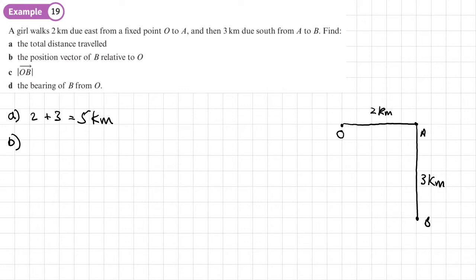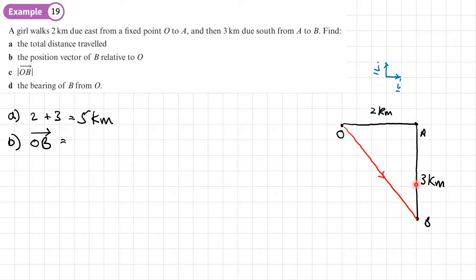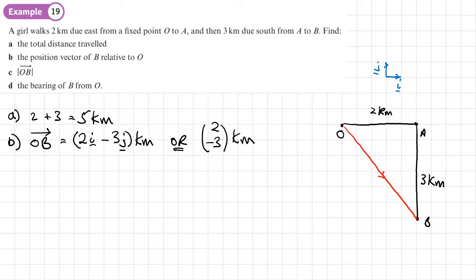Part B: the position vector of B relative to O. That is OB. To get from O to B, using the unit vectors i and j, it's going to be two across and three down, so two i minus three j kilometers. We could also give the answer as a column vector: (2, -3) kilometers.